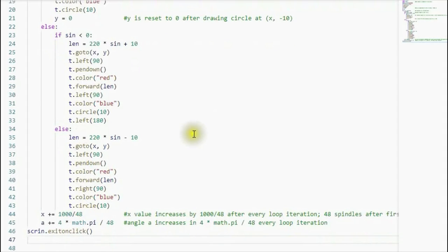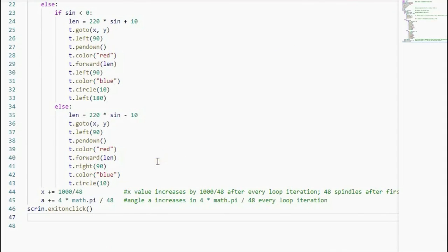Now just in case the sign is greater than zero, in this case the spindle length is actually positive and the turtle does not go backward.